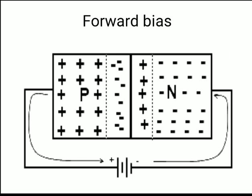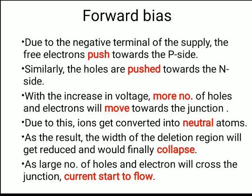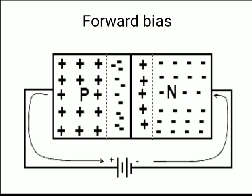In the forward bias diagram, the p-type semiconductor is connected to the positive terminal and the n-type semiconductor is connected to the negative terminal. In between we can see the depletion region, with negative immobile ions and positive immobile ions on opposite sides of the junction.